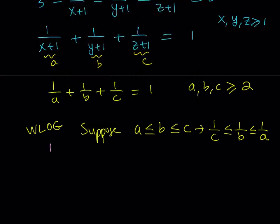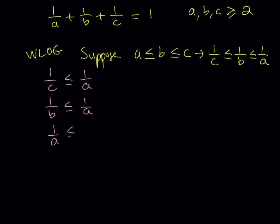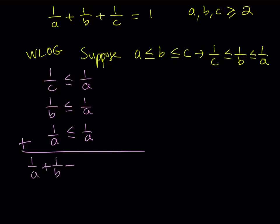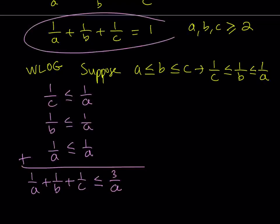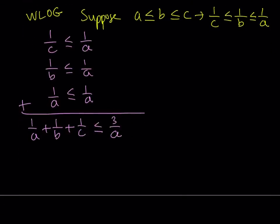I'm going to be writing a bunch of inequalities. From the transitive property, we can say that 1 over C is less than or equal to 1 over A, and 1 over B is also less than or equal to 1 over A. Since we have the equality, 1 over A is less than or equal to 1 over A. Now I'm going to add these inequalities — that's going to give me something super helpful. I want to get 1 over A plus 1 over B plus 1 over C, and from here I'm getting 1 over A three times, so that becomes 3 over A. We know 1 over A plus 1 over B plus 1 over C equals 1, so I can replace that with 1. That gives me 1 is less than or equal to 3 over A. If you flip both sides, you get A over 3 is less than or equal to 1, which implies that A is less than or equal to 3.